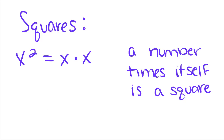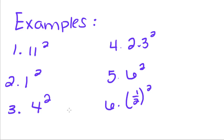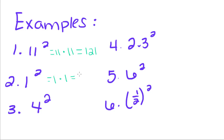We're going to do some examples where we write out the square and find out what it equals. So 11 squared is just saying 11 times 11 equals what? And 11 times 11 is equal to 121. Then 4 times 4 is equal to 16.